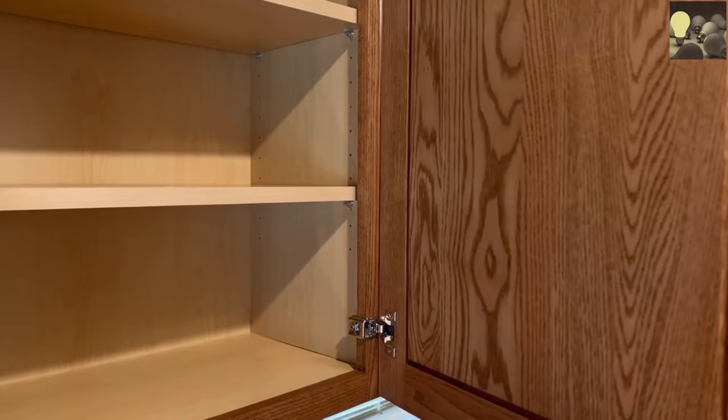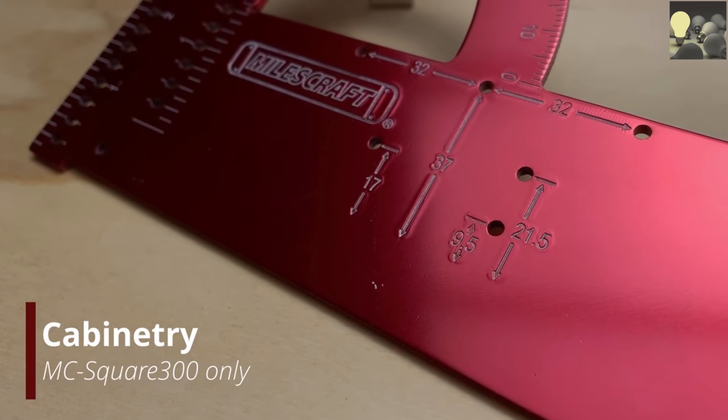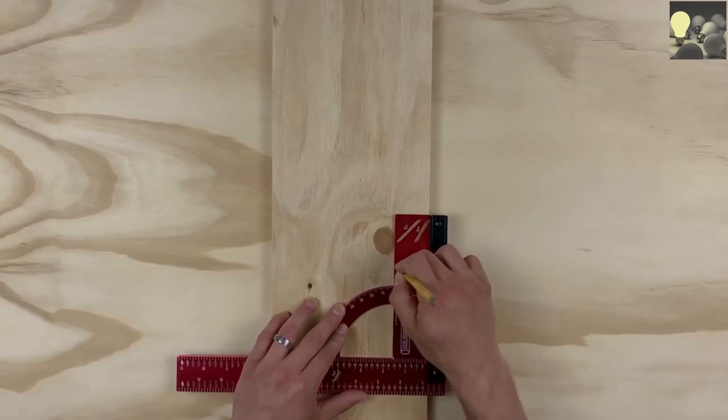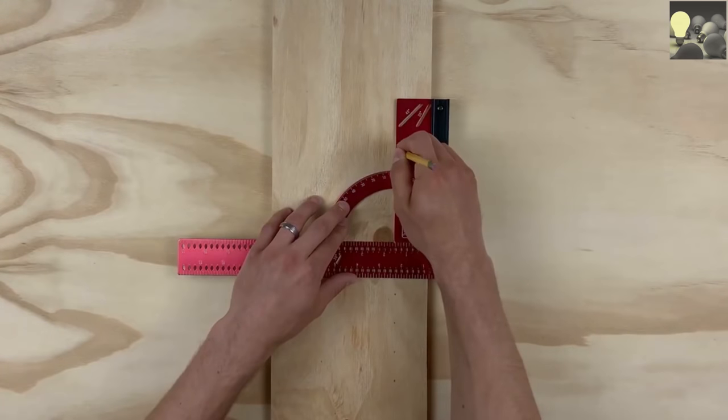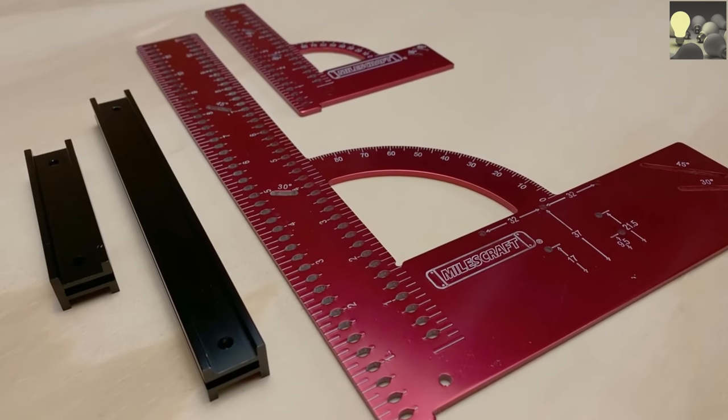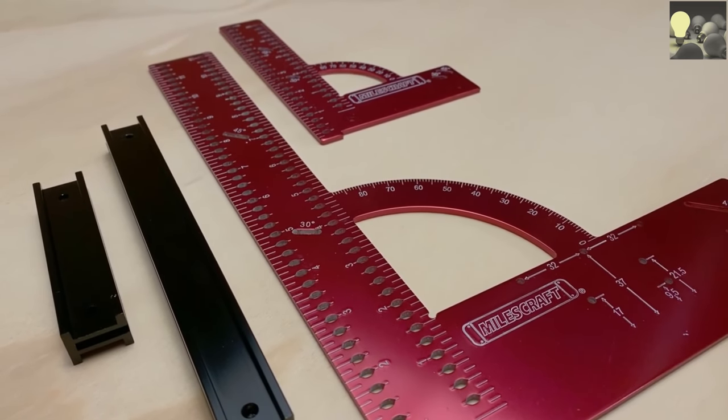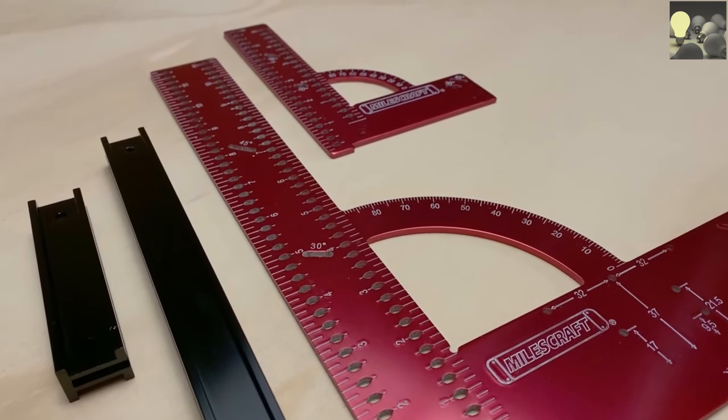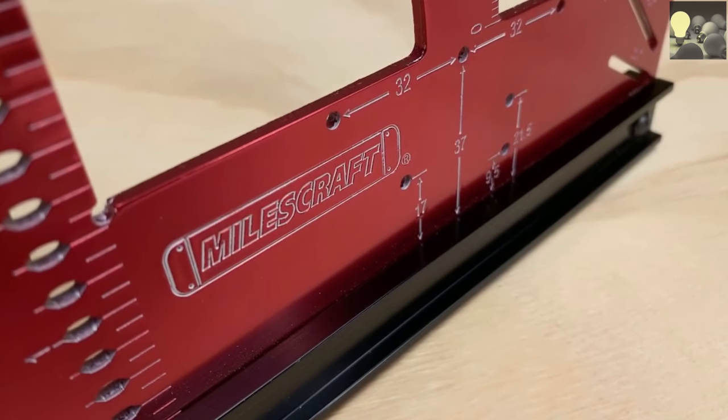For cabinetry, the MC Square 300 has you covered to lay out shelf pins and hinge cups. The feature packed MC Square 150 and MC Square 300 will take care of all your marking and measuring needs. Miles Craft. Always the better idea.